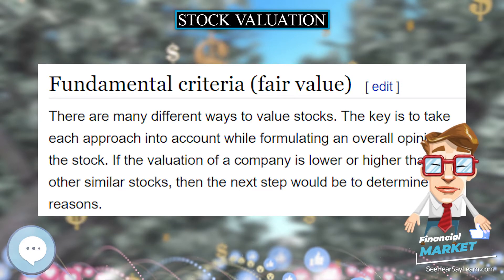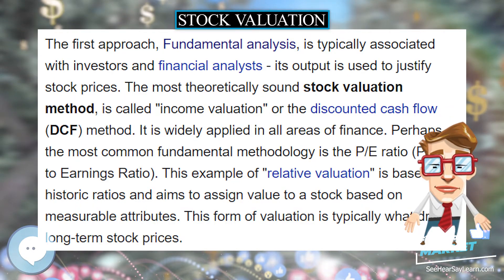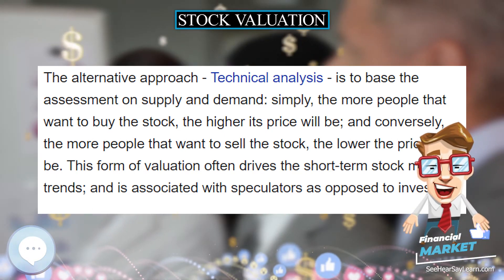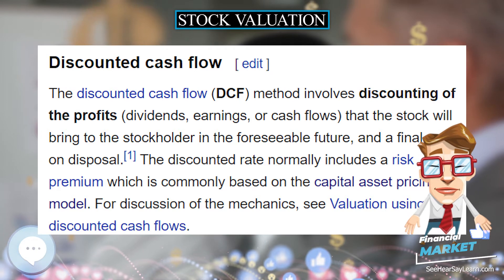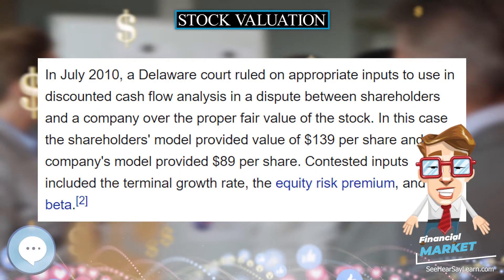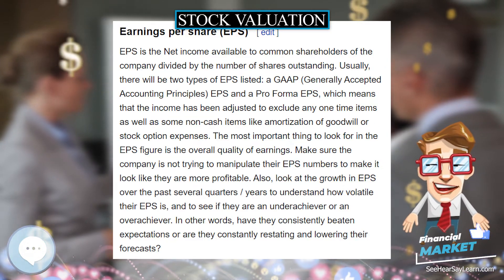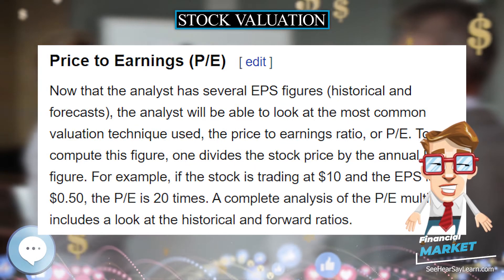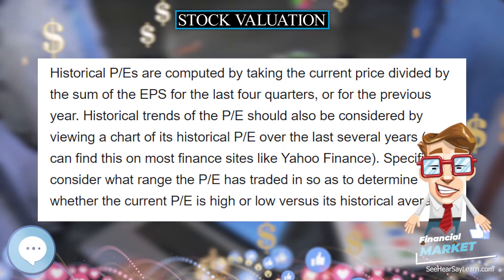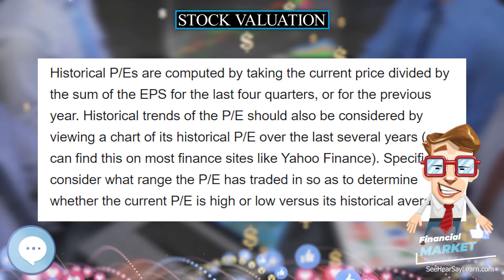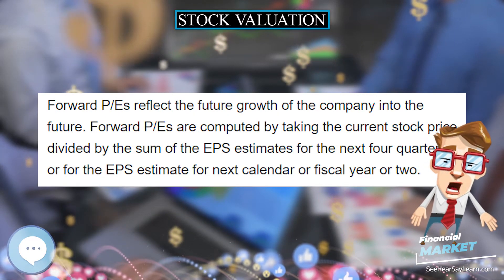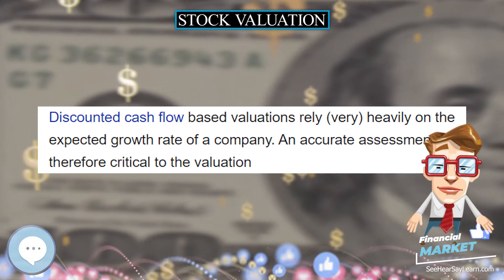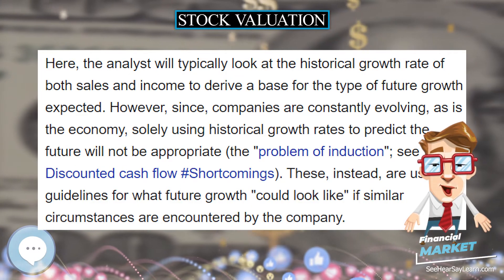Price Earnings to Growth Ratio. This valuation technique has become very popular over the past decade or so. It is better than just looking at a PE because it takes three factors into account: the price, earnings, and earnings growth rates. To compute the PEG ratio, the forward PE is divided by the expected earnings growth rate. One can also use historical PE and historical growth rate to see where it has traded in the past. This will yield a ratio that is usually expressed as a percentage. The theory goes that as the percentage rises over 100%, the stock becomes more and more overvalued, and as the PEG ratio falls below 100%, the stock becomes more and more undervalued. The theory is based on a belief that PE ratios should approximate the long-term growth rate of a company's earnings, and is therefore just a rule of thumb to use in the overall valuation process.